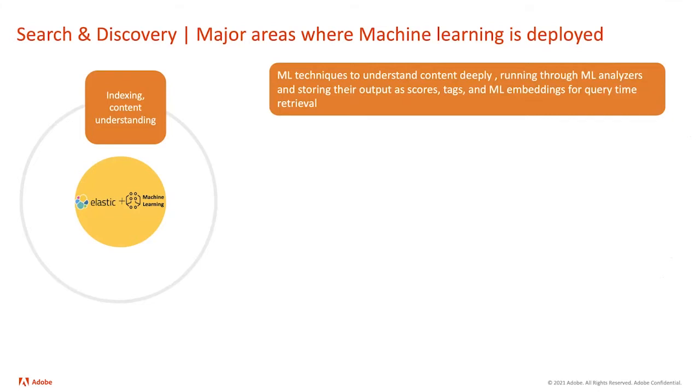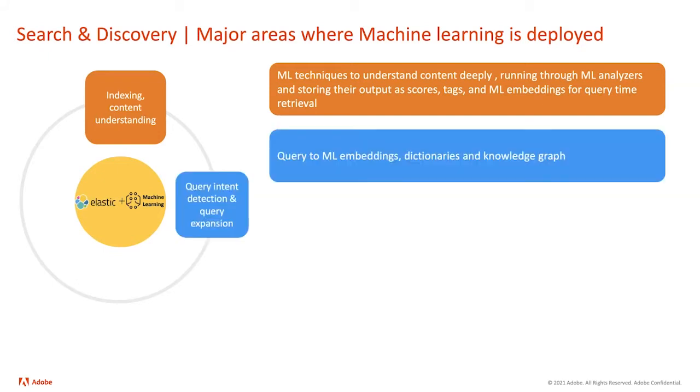This is a good segue to: where are we using machine learning? There are four different places, majorly, where we're applying machine learning. The first is understanding the content. As you've seen, it's not only about text — we're applying ML on videos, audios, and images. Creating those ML embeddings, scores, and tags during ingestion is critical for our success.